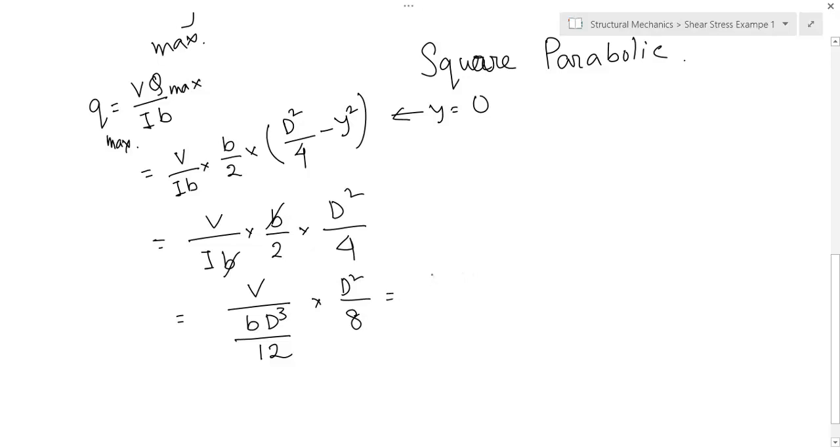Put the value of I which is b d cube by 12 into d square by 8. So, you get V by b d into 12 by 8. This is nothing but 3 by 2, V by b d.